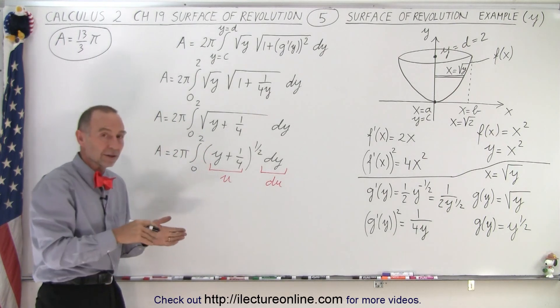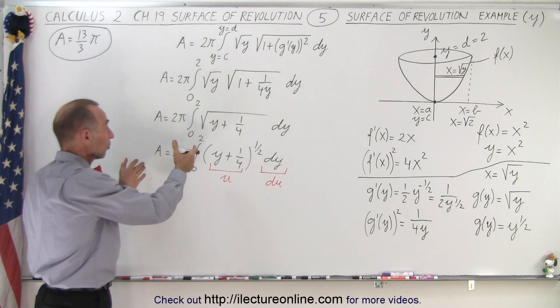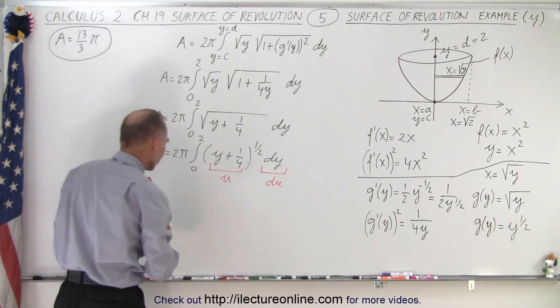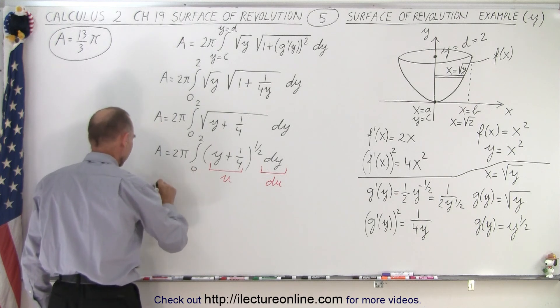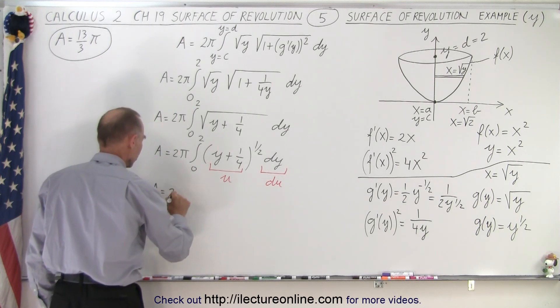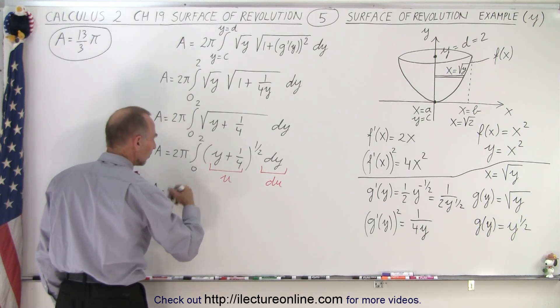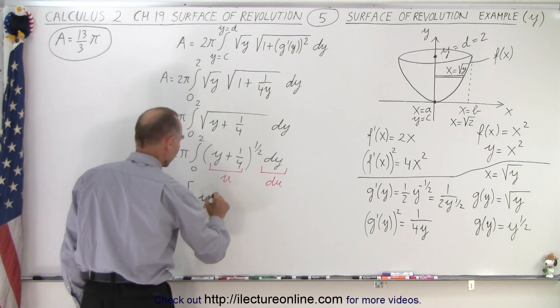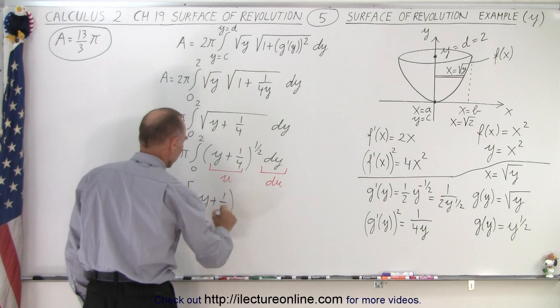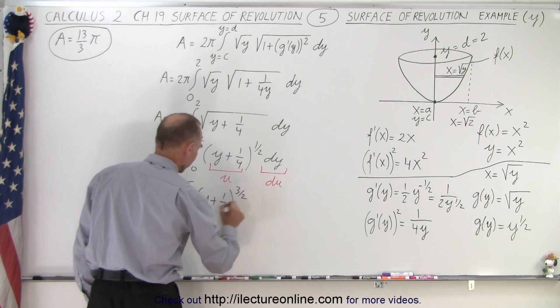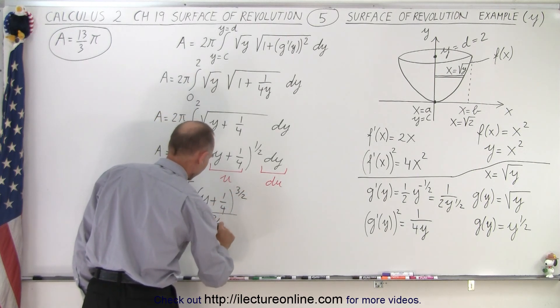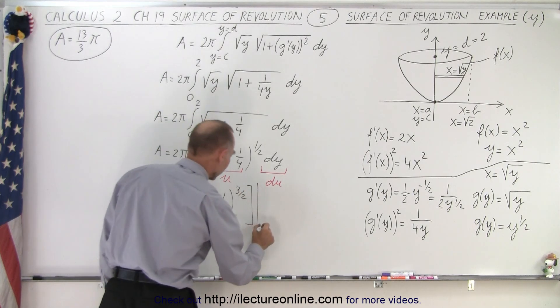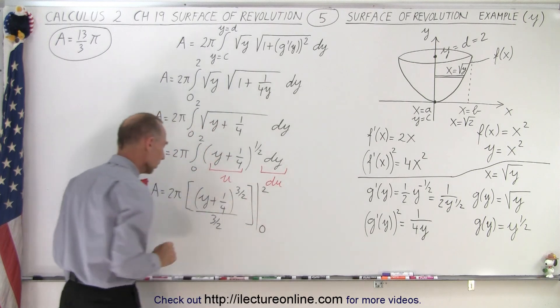So notice that in this case, if you choose this method to solve the problem, it's a little bit easier than using the previous method, although the previous method wasn't particularly hard. So A equals 2 pi times, now we can integrate, so when we integrate this, we get y plus 1 quarter to the 3 halves power divided by the new exponent, 3 halves, and we have to evaluate that from 0 to 2, remember these are y limits.